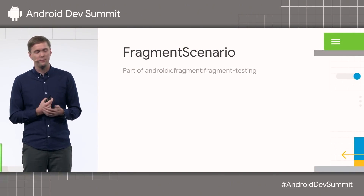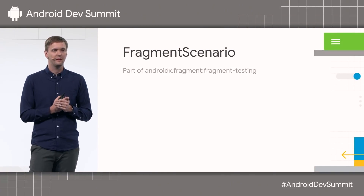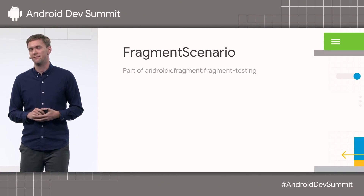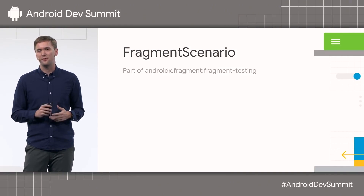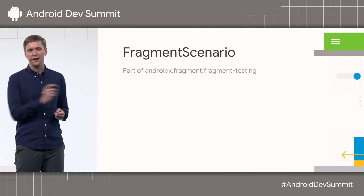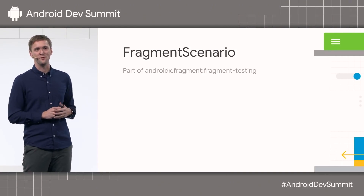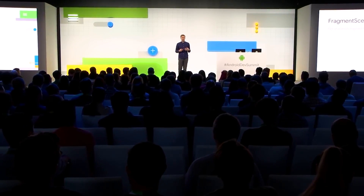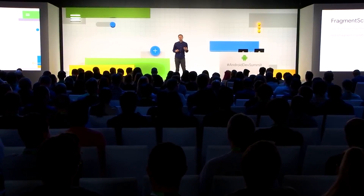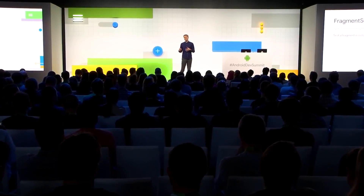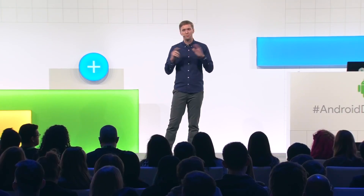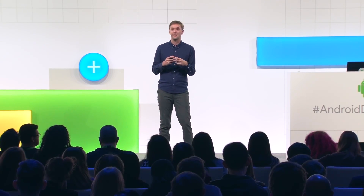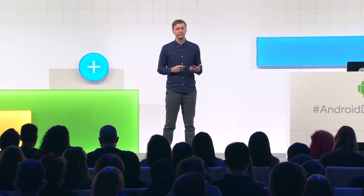So how can we do this? This Monday we released Fragment 1.1, the first alpha. With this came a new artifact called Fragment Testing, which is about six years overdue. It's really about being able to test your AndroidX fragments in isolation — separate from an activity, separate from everything else — but being able to verify that the fragment is doing the right thing.